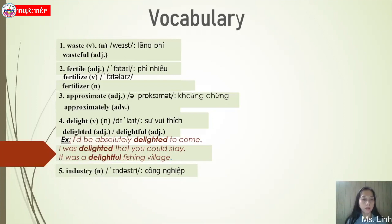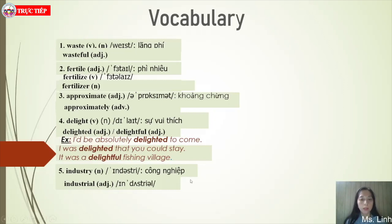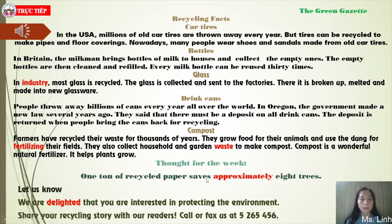Industry — công nghiệp. Industrial — the adjective form. That concludes our vocabulary. The teacher will now return to the reading passage to help students understand the content more clearly.